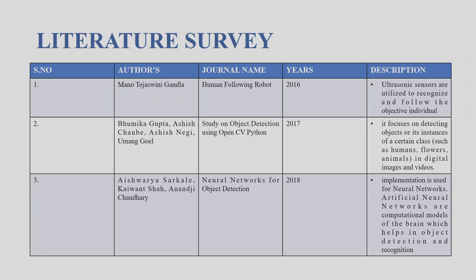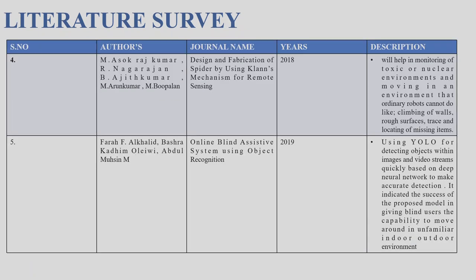The third journal is 'Neural Networks for Object Detection' by Aishwarya Shakhali Kaivansha and Andhiji Chaudhary, in 2018. The implementation uses Neural Networks — Artificial Neural Networks, a computational model of the brain — which helps in object detection and recognition.